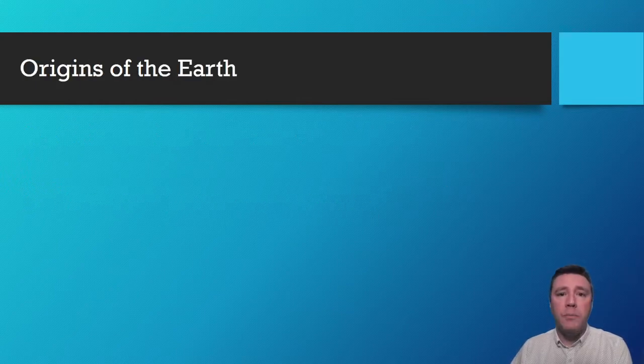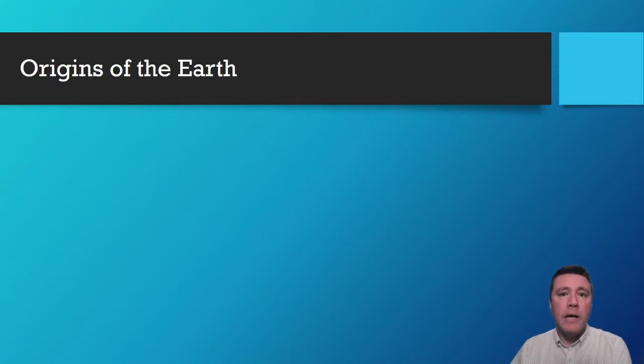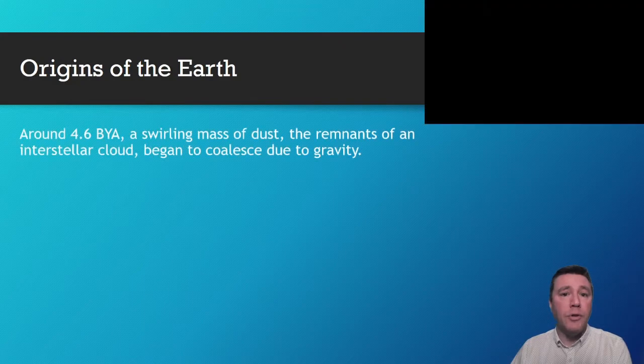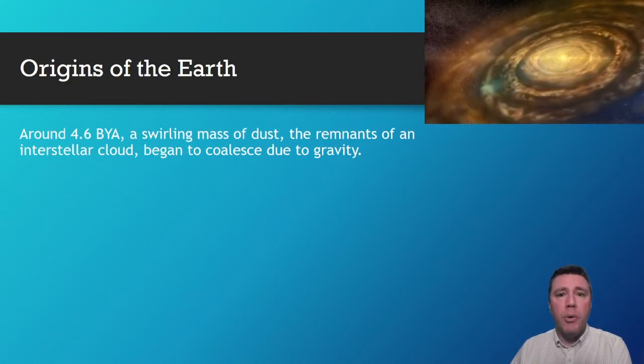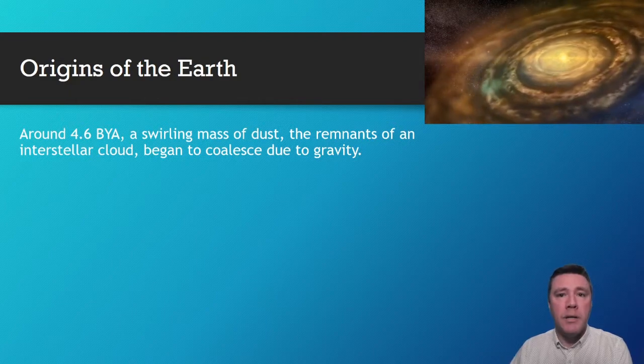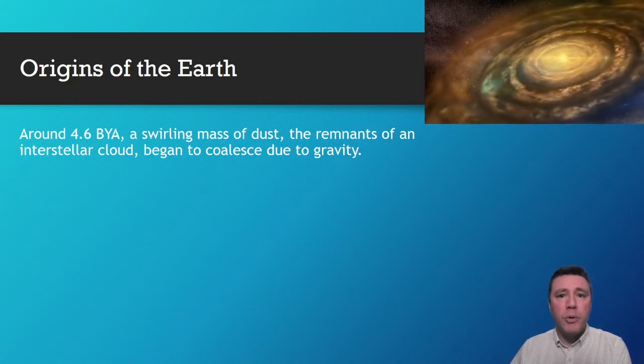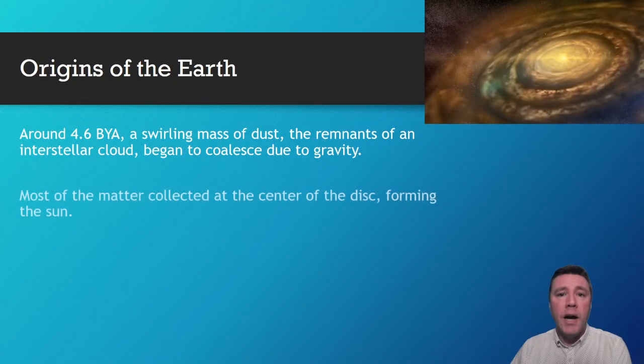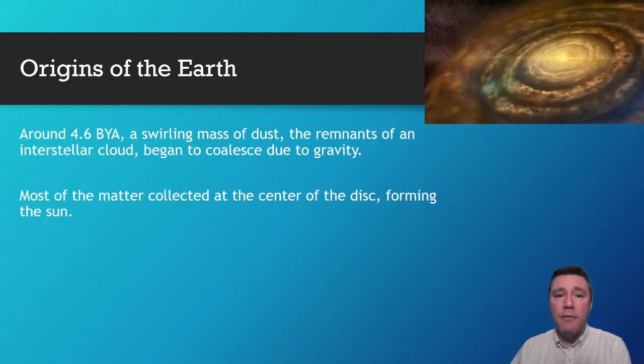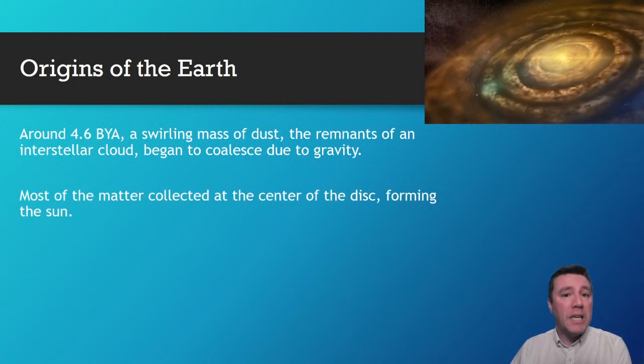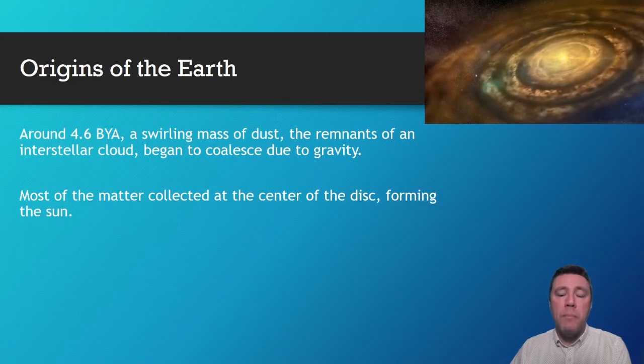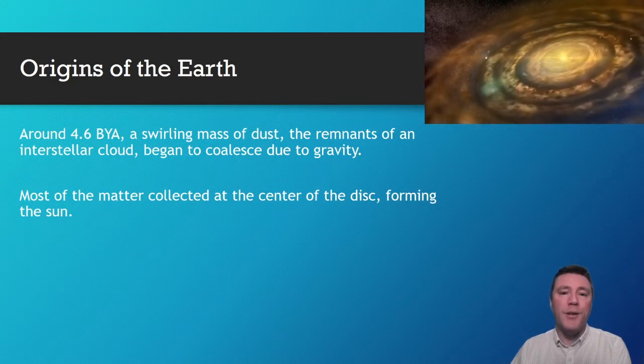Around 4.6 billion years ago, a swirling mass of dust, the remnants of an interstellar cloud, began to coalesce on itself due to gravity. At the center, gravity pulled more and more material in. Eventually, the pressure in the core was so great that hydrogen atoms began to combine via nuclear fusion, forming helium and releasing tremendous amounts of energy, and our sun was born.